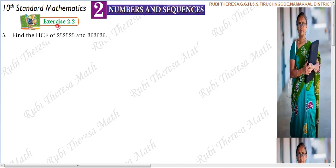Third sum in Exercise 2.2: find the HCF of 252,525 and 363,636. What is the previous concept that we have studied?